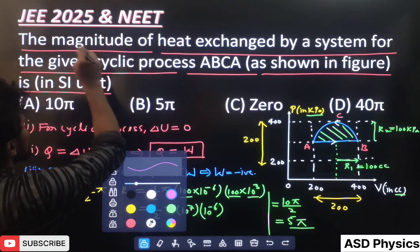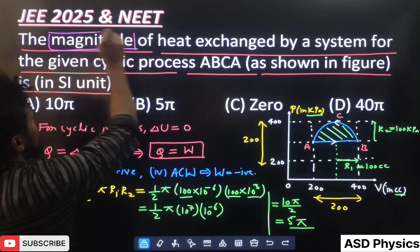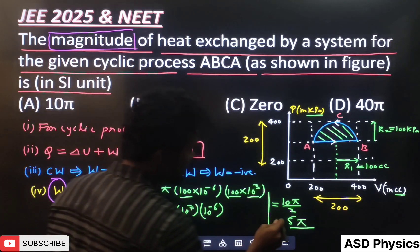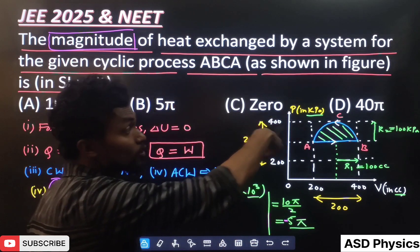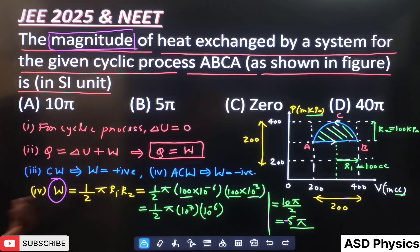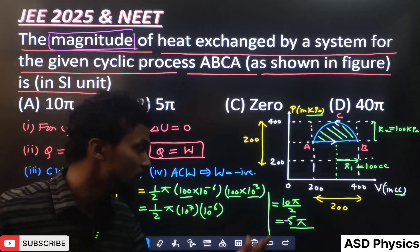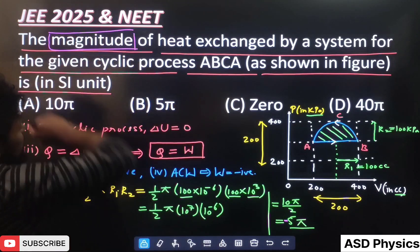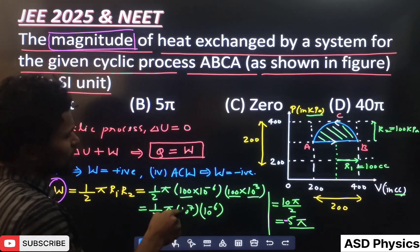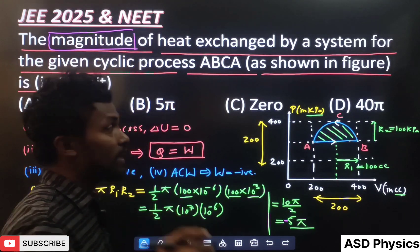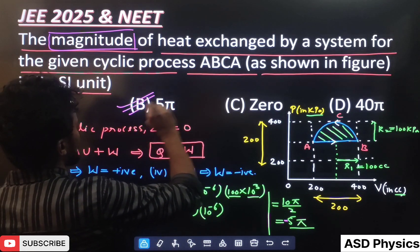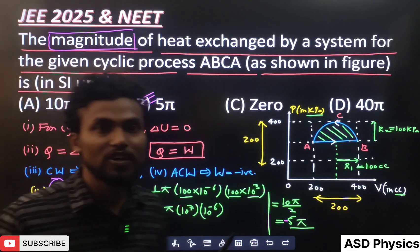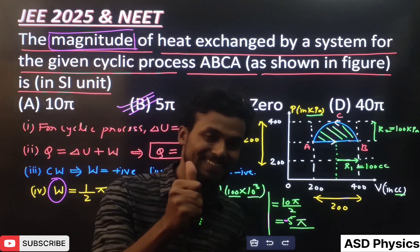But the question is asking for the magnitude. Since this is an anticlockwise cycle, the work done is negative — minus 5 pi. Since they are asking only for the magnitude, we omit the minus sign, and the final answer is 5 pi. I hope you all have understood these concepts well. Keep studying!